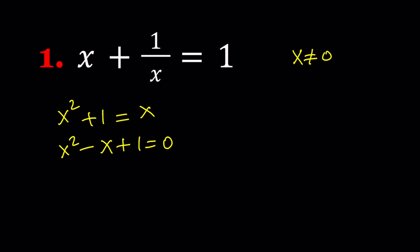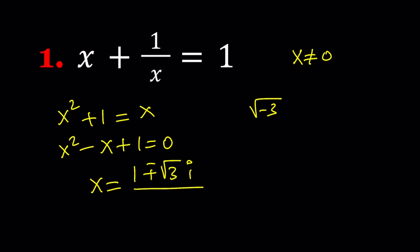If we use the quadratic formula on this one, we get negative b plus or minus the square root of b squared minus 4ac, which is the square root of negative 3 — written as square root of 3 times i — divided by 2a. So those are going to be the solutions, and as you know, those are complex numbers. If you want, you can also write them in polar form.